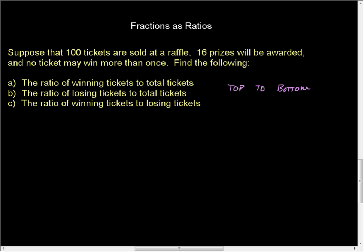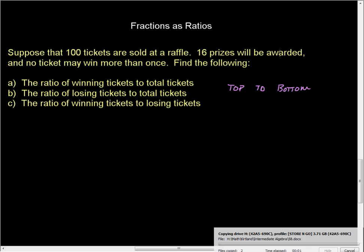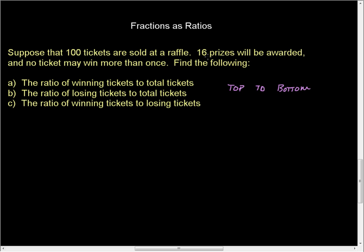If we were to look at the ratio of — take part A — the ratio of winning tickets: 16 prizes will be awarded, and no ticket may win more than once. That means you're going to have 16 winning tickets. You're going to take those 16 — that's your number of winning tickets, part A. I have 16 winners on top, but I'm looking at total tickets, and I have 100 tickets. So my ratio of winning tickets to total tickets is 16 to 100, or 16 over 100.